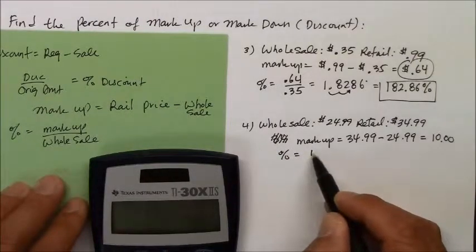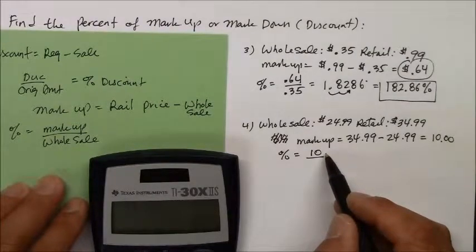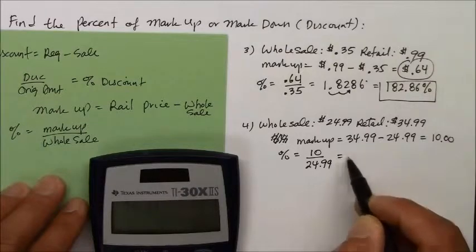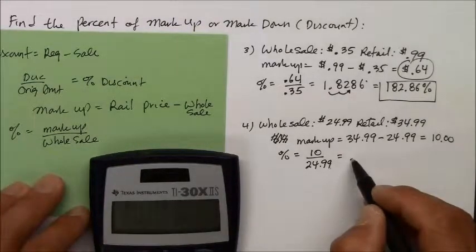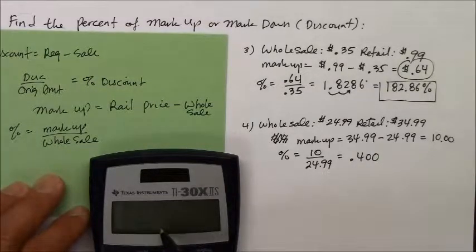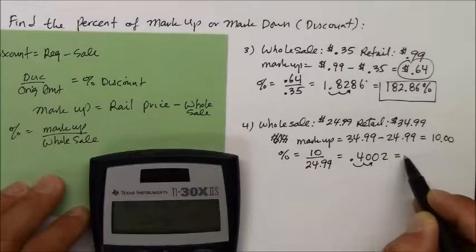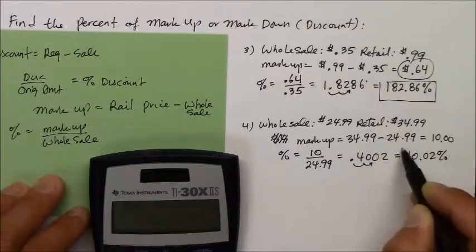Now you take that to find a percent, you take that $10 markup, divide it by the base, what it cost you originally, which was $24.99. So you could determine how much you actually increase the price. So $10 divided by $24.99, in this case you get 0.4002 rounded out to the ten thousandth. So move the decimal to the right twice, you end up with 40.02% markup.